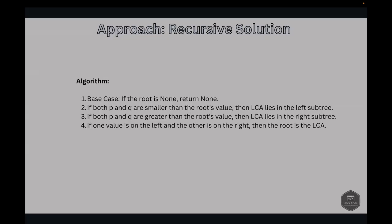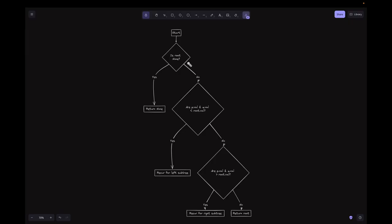Let's look into the approaches. The first is the recursive solution. The base case: if root is None, we return None. If both P and Q are smaller than the root's value, the LCA lies in the left subtree, so we recurse left. If both P and Q are greater than the root's value, the LCA lies in the right subtree, so we recurse right. If one value is on the left and the other is on the right, then the root is the LCA.